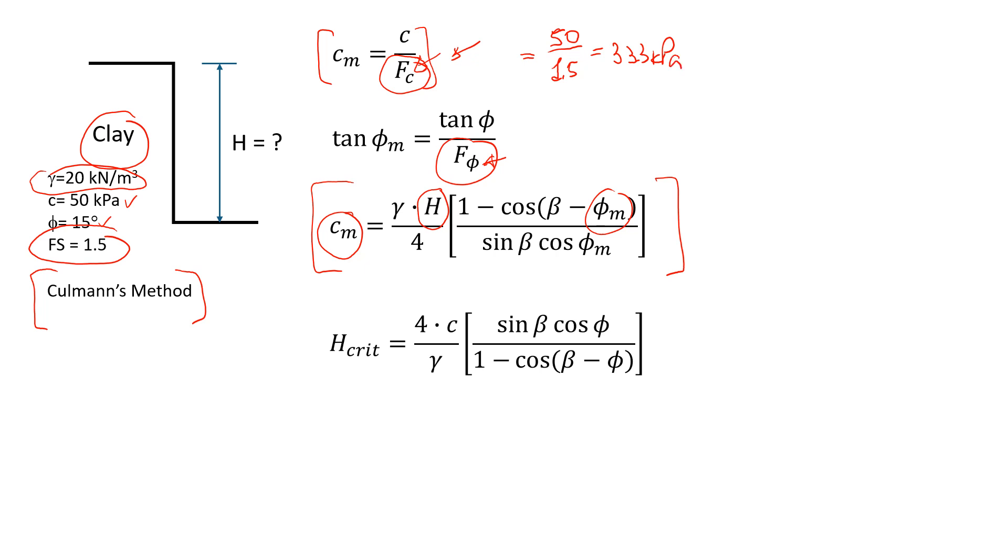Now we're going to estimate the mobilized friction angle. We take tangent of friction angle - in this example 15 degrees - divided by the factor of safety which is 1.5. That gives us a value of 0.179, which leads to a mobilized friction angle of about 10.1 degrees.